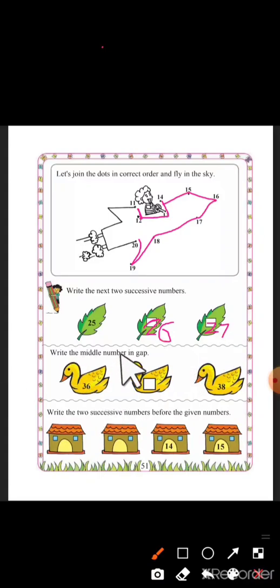Write the middle number in gap. First number is 36, last number is 38. Which number will come in the middle? After 36, which number will come? Very good, 37.